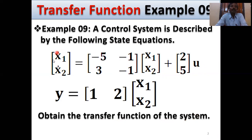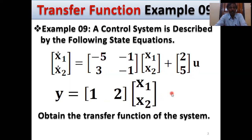Given the state equation: x-dot = Ax + Bu, y = Cx, where D equals the null matrix. Our target is transfer function calculation — obtaining the transfer function of the system. Solution starts.